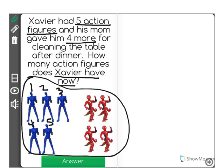And the way that we find out how many he has all together is to count on. So he had these five to the left.